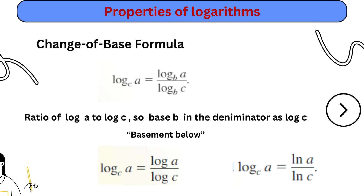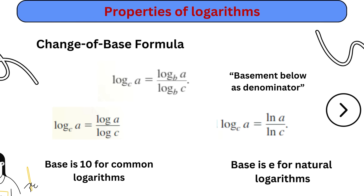Change of base formula: log of a to base c equals log a over log c, where both logs are to base b. To write log a to base c, express it as the ratio of log a to log c, moving base c to the denominator. Remember the phrase: basement below as denominator. Or simply use log a over log c with base 10, or ln a over ln c for the natural logarithm with base e.